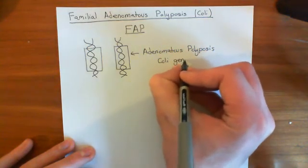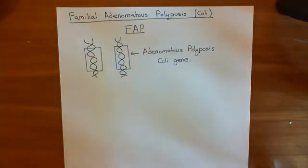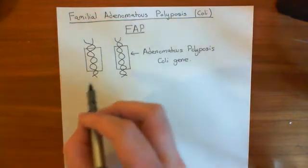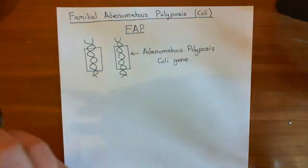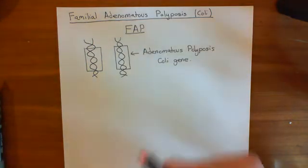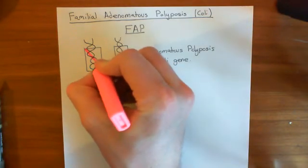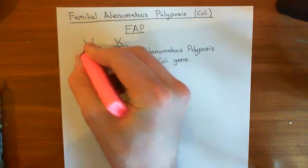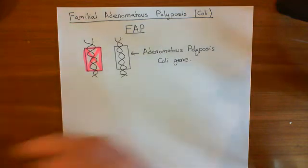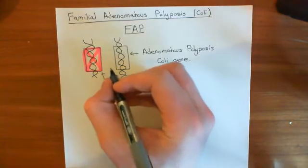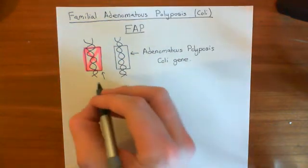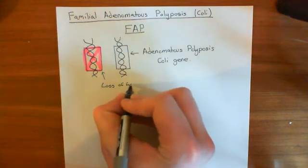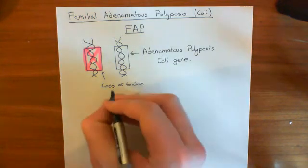What happens in familial adenomatous polyposis is that in the germline, you are missing or have a loss of function mutation in one of these genes. So from birth, absolutely every single one of your cells, on one of the chromosomes, has a non-functional adenomatous polyposis coli gene — it's not working. Maybe it has been deleted, maybe it has a mutation, or maybe the promoter region is silent and it's not being expressed at all. Whatever the reason, you have loss of function of one of your APC genes.